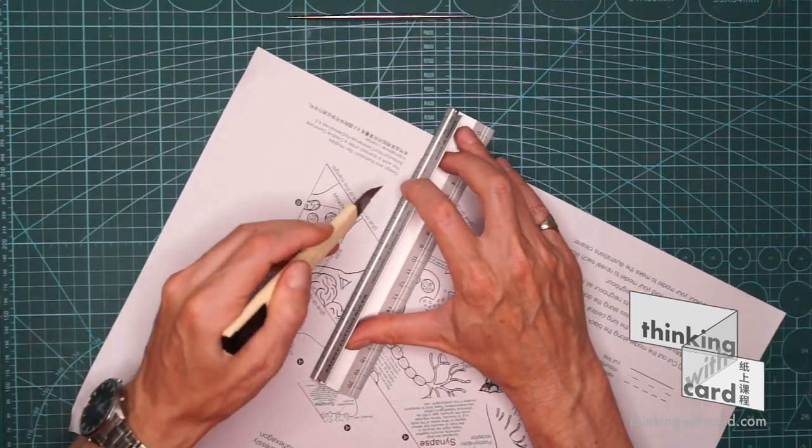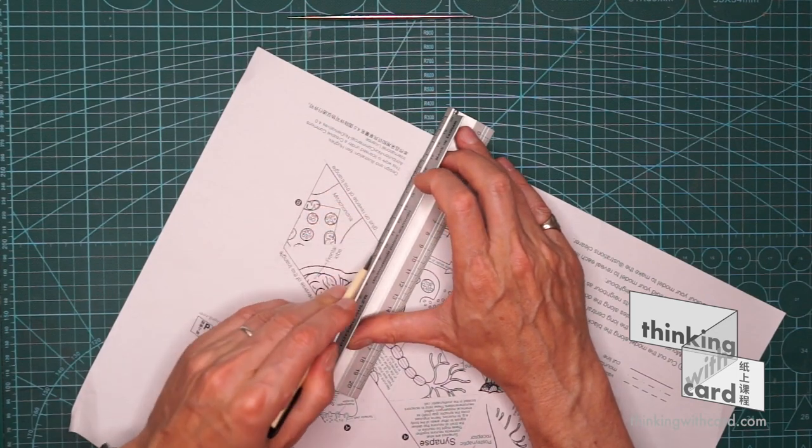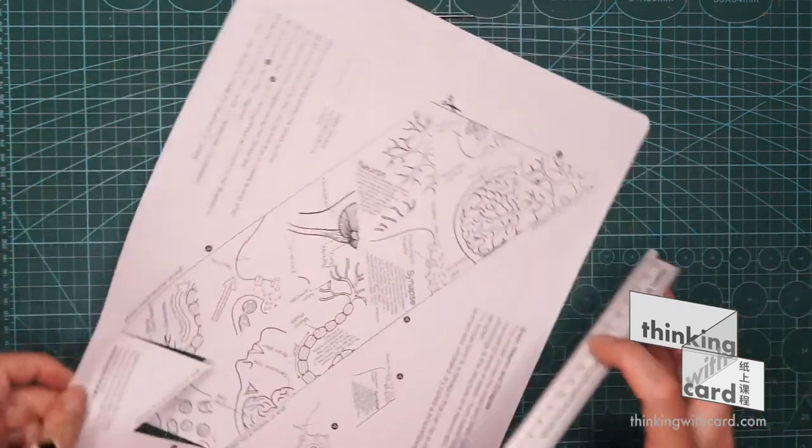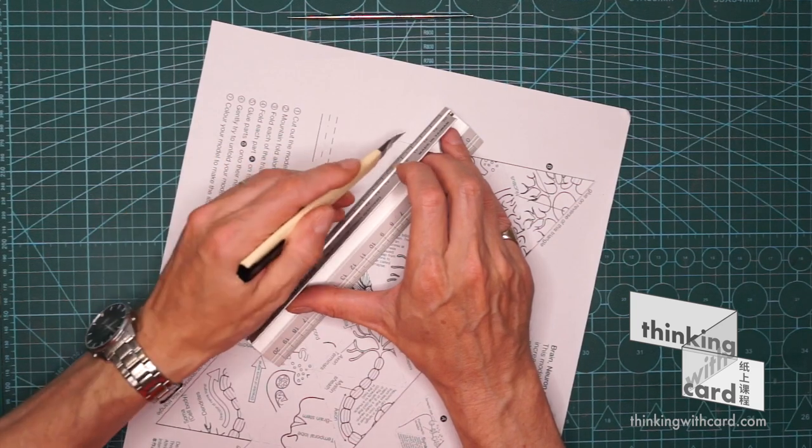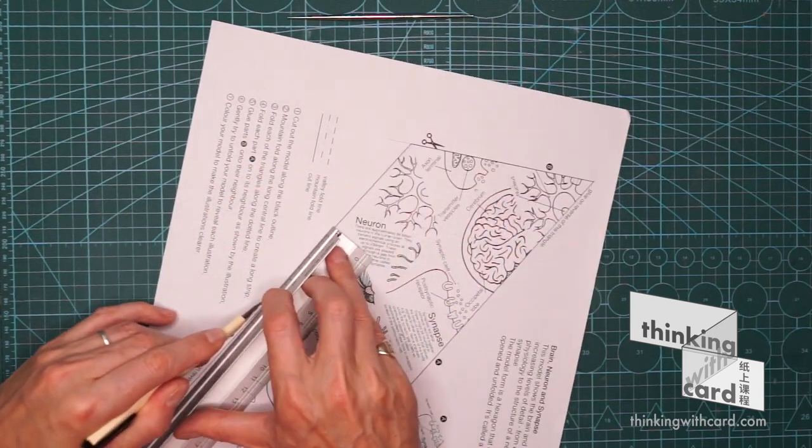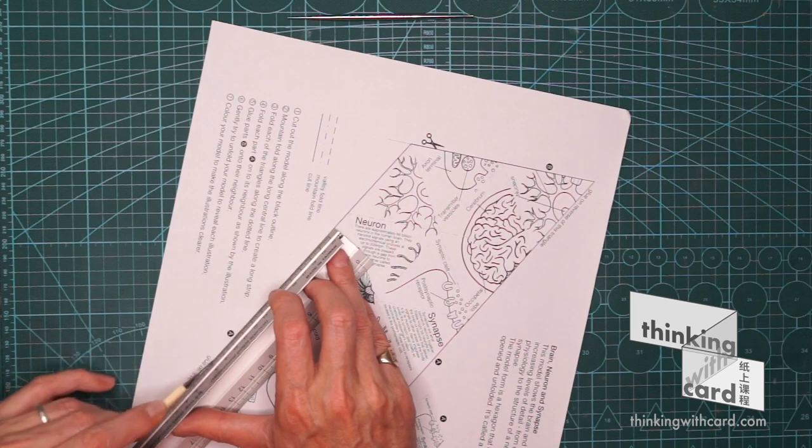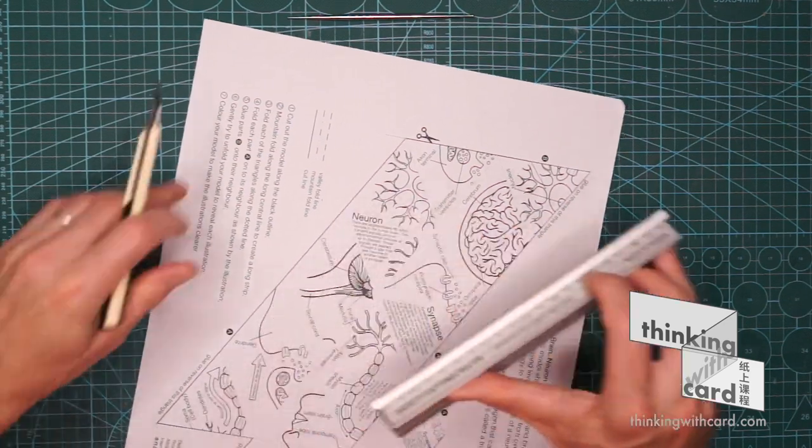It's a simple model to cut out. There's only one part to it. And then the next thing to do is to fold it.